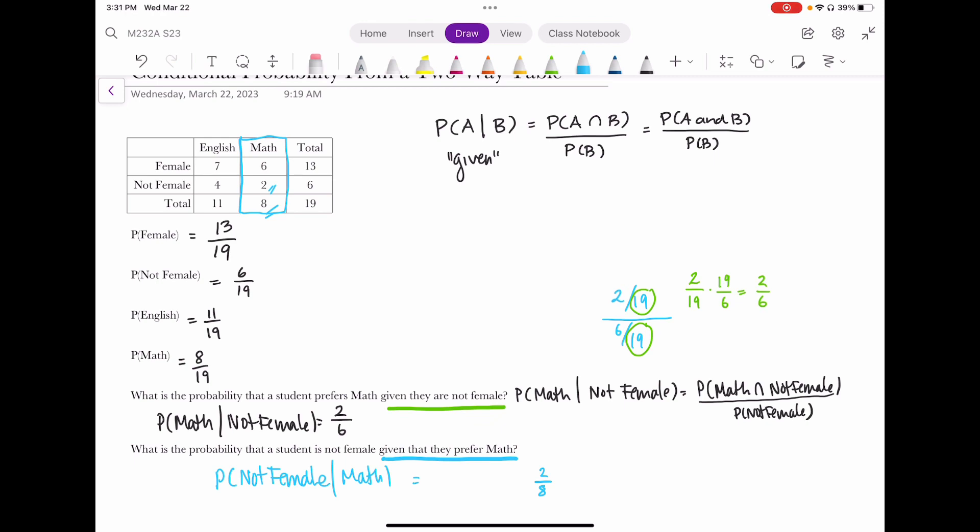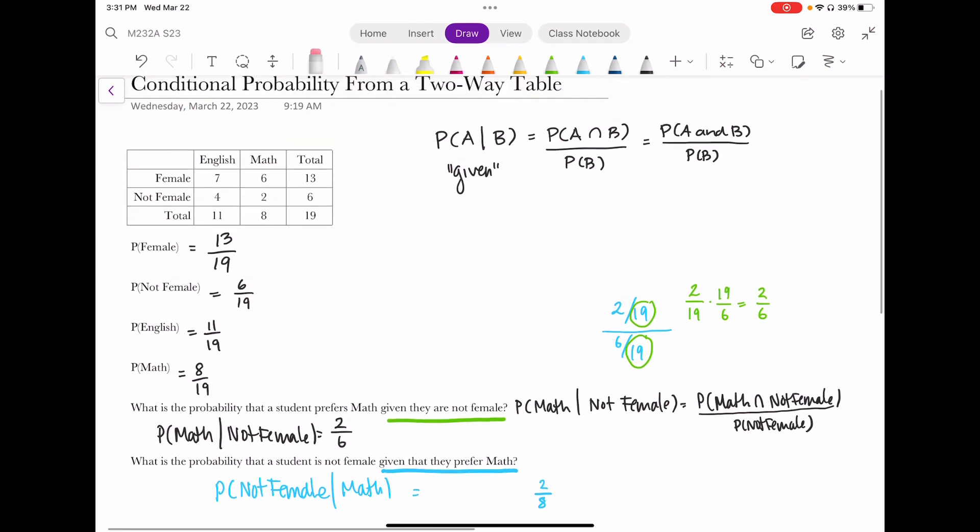So I encourage you when you're doing conditional probability in a two way table to use what you're given. That's going to wind up being your denominator, but that's the group that you're focusing on. If I asked you to focus on females, then I would be dealing with this row right here. If I was dealing with not females, the next row. People who prefer English and then people who prefer math. So there's four different subsets that I could create to find conditional probability. Hope that helps.